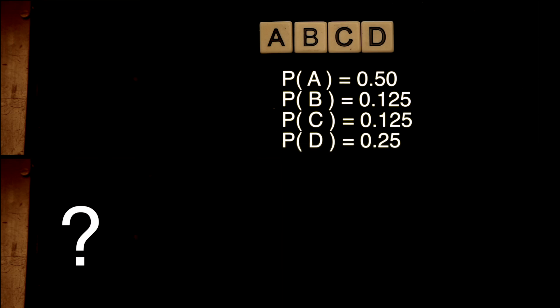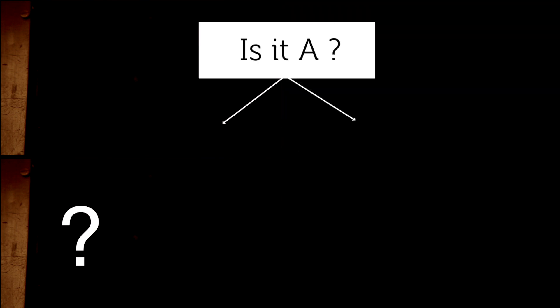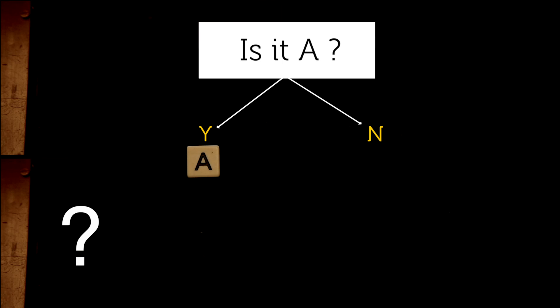Here, A has a 50% chance of occurring, and all other letters add to 50%. So we could start by asking, is it A? If it is A, we are done—only one question in this case.